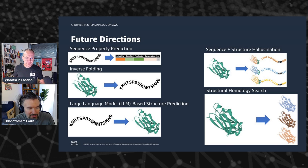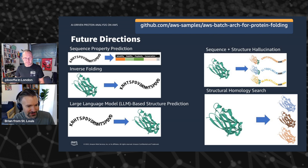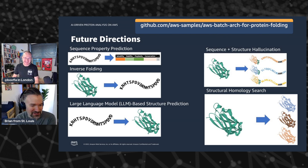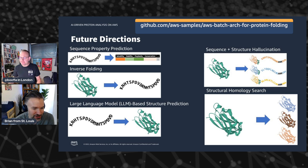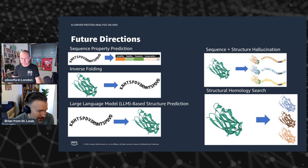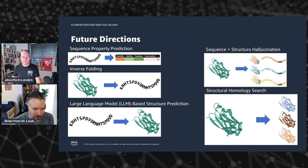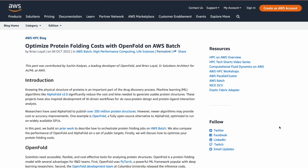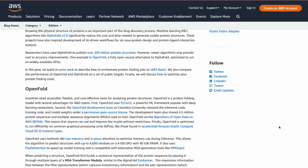We've been calling it the AWS Architecture for Protein Folding and Design. It is open source under Apache 2. If you want to give it a go in your own account, feel free to download it and spin it up. We say you can get the entire infrastructure set up in about 30 minutes. It takes a few hours to download all the data you need after that, but let it run overnight and by the next morning you can be up and running with protein folding algorithms.